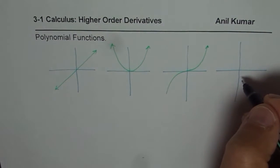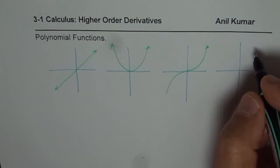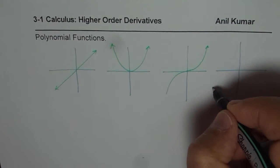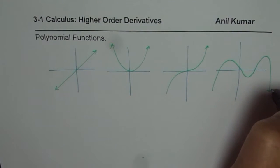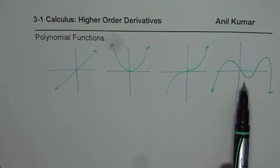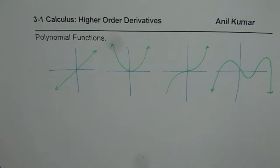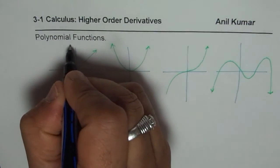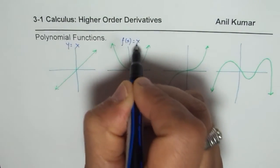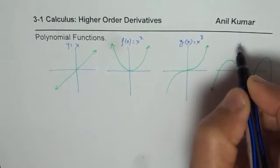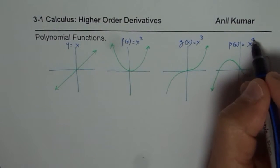We could also have a degree 4 polynomial. Instead of taking the parent function x to the power of 4, I will take a combination — a graph that is not quite the parent function. So these are: y equals to x, y equals to x squared, x cubed, and this is some other degree 4 function. The whole idea here is to understand how the graph of higher order derivatives is going to look like.